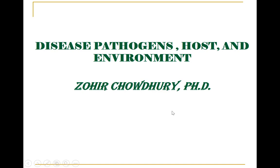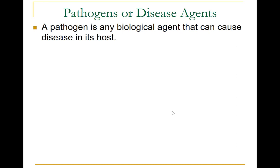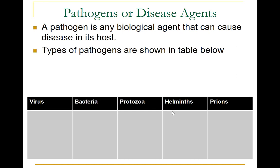Hello everybody, my name is Ohir Chaudhary. Today's topic is about disease, pathogens, hosts, and environment as it applies to vector-borne diseases and zoonotic diseases. A pathogen is any biological agent that can cause disease or illness in its host. These pathogens can be bacteria, viruses, protozoa, parasites, helminths, or prions. The table below displays the different types of pathogens.